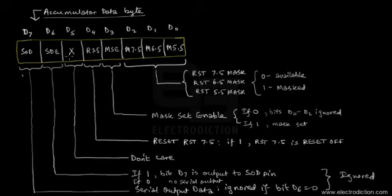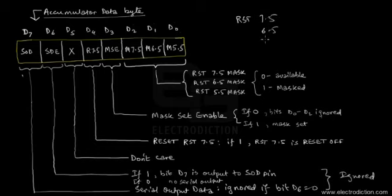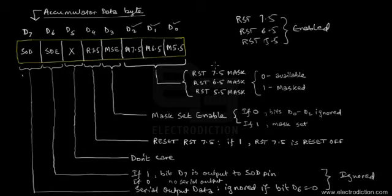The bit D5 is a don't-care condition. The bits D4 to D0 are the ones of interest. If we put a logic zero into any of the bit positions D0, D1, or D2, then RST 5.5, 6.5, and 7.5 respectively would be enabled. So a logic zero at each of D0, D1, and D2 means those RST interrupts are enabled.